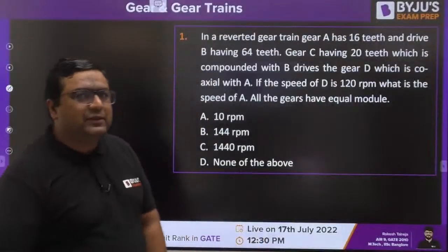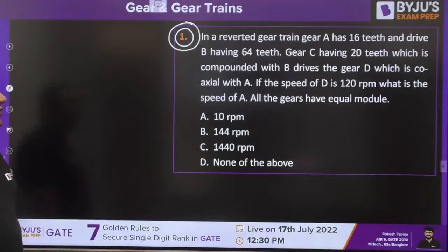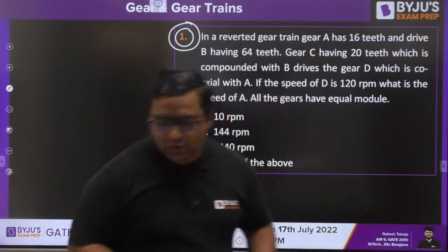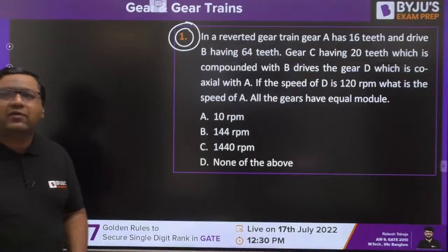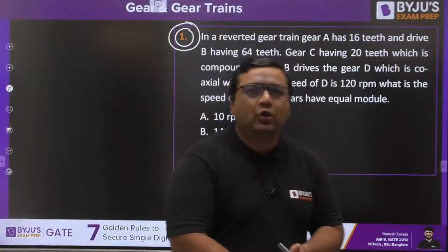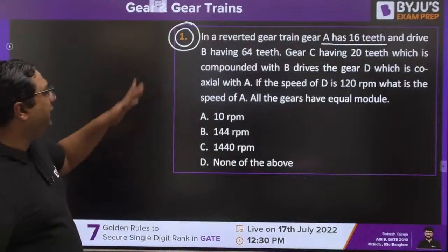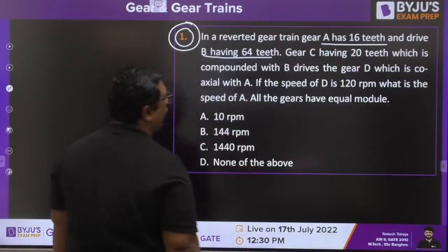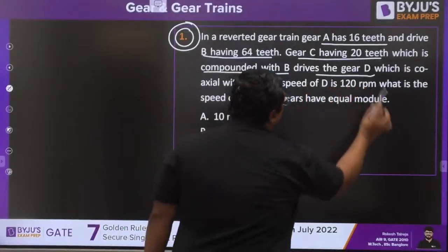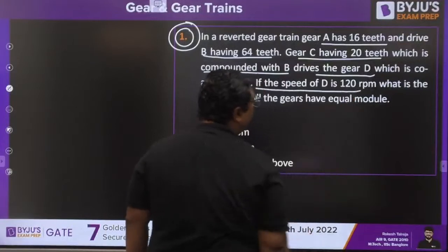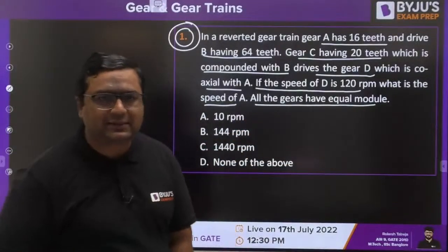The first question is from a reverted gear train. In a reverted gear train, gear A has 16 teeth and drives gear B which has 64 teeth. Gear C has 20 teeth and is compounded with B, driving gear D which is coaxial with A. If the speed of D is 120 RPM, what is the speed of A? All gears have equal module.